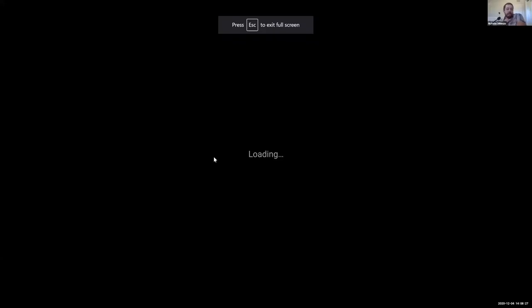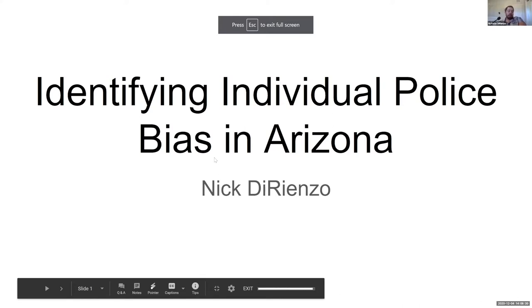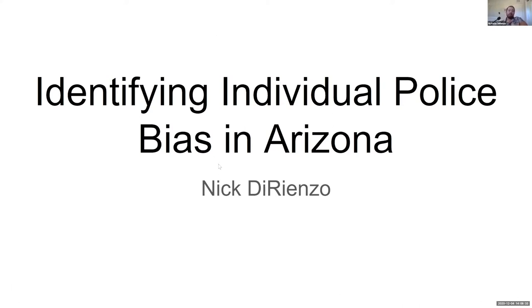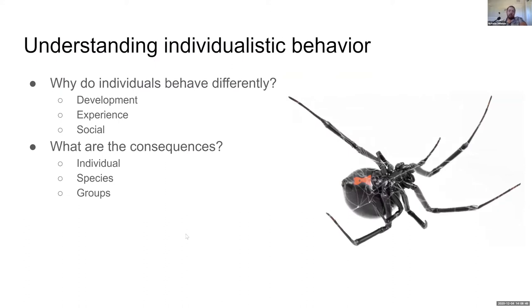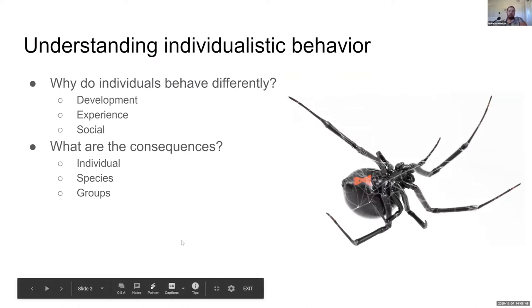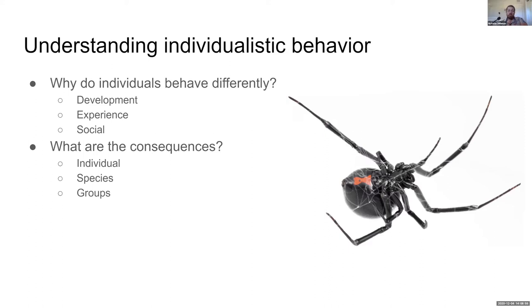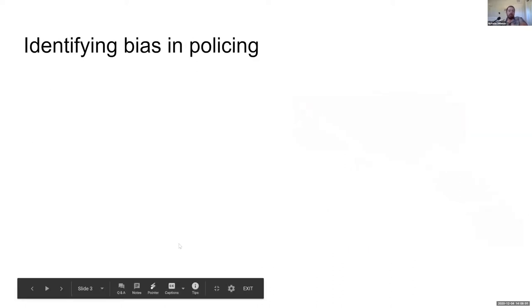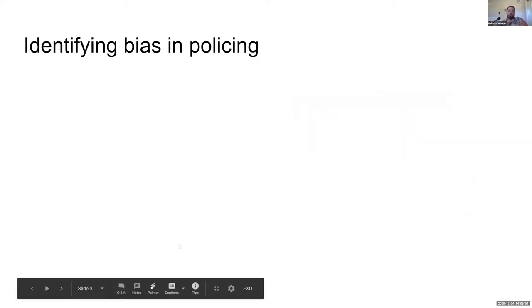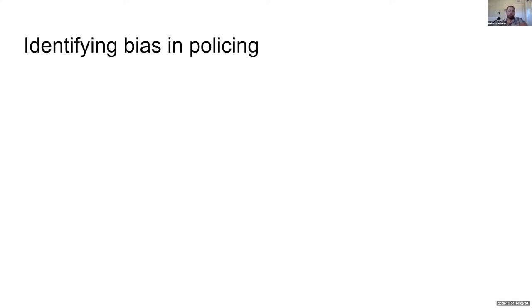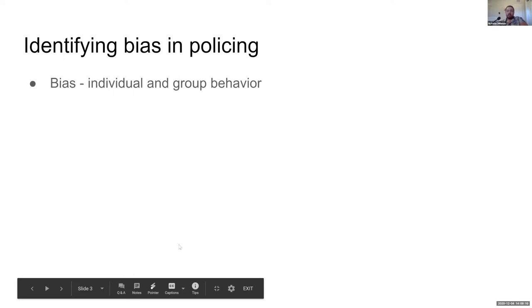Hey everyone, thanks for listening. This is going to be quick. I'm talking about some work I've been doing completely on the side as teaching faculty — all the research happens at night or on my own time. This is about looking at individual bias in police officers in Arizona. I've historically done a lot of work looking at individualistic behavior in animals — why one individual would behave differently due to development, experience, or social environment, and the consequences for decision making. Coming to the iSchool, I've pivoted to larger questions about identifying bias in policing.